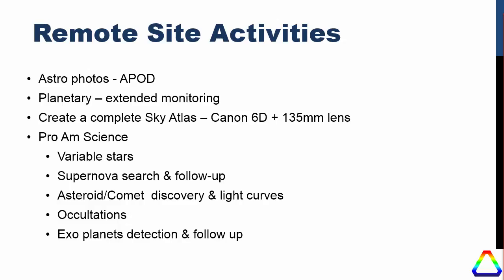There's also a lot of pro-am science that can be done using a remote site. Variable stars are a good example — one observer at my location has contributed literally tens of thousands of variable star measurements thanks to that remote site and a large number of clear nights. Supernova search and follow-up is another popular activity; you can hit a large number of targets over the course of an evening, and with computer control it's easy to do follow-up and determine whether you've got a new supernova. Asteroid and comet discovery and light curves are also popular.